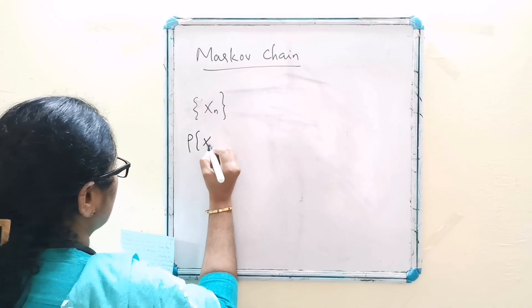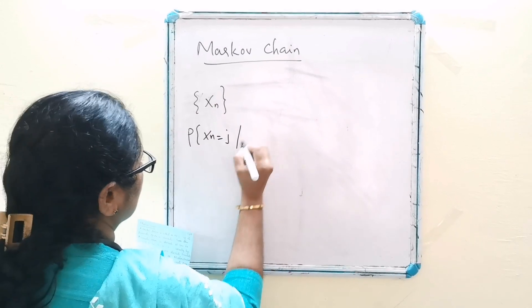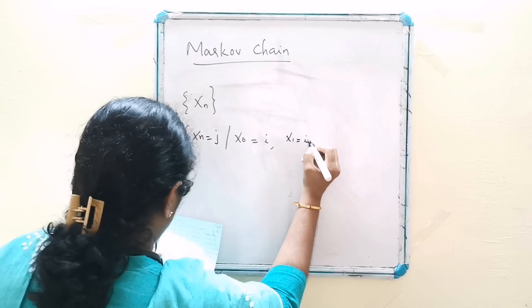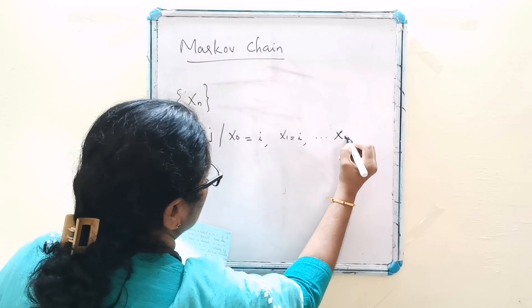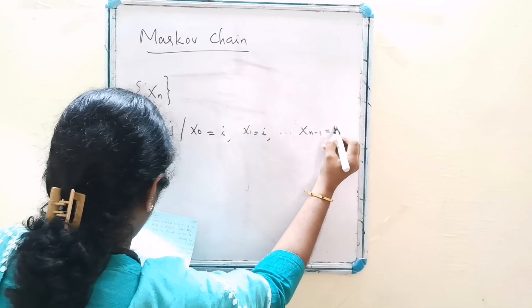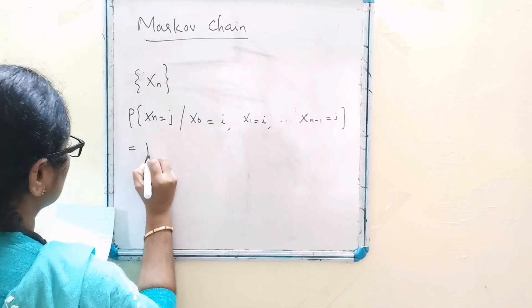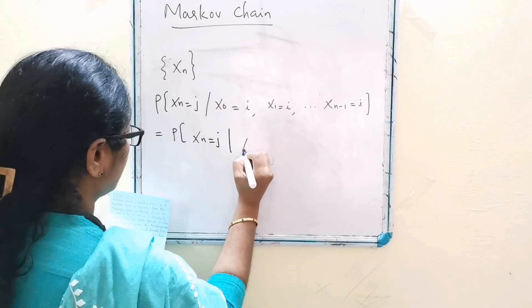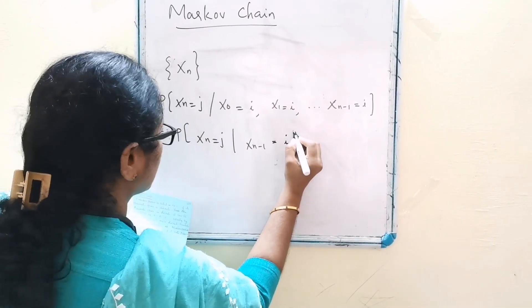probability of xn equal to j given x0 equal to i, x1 equal to i, etc., xn-1 equal to i is equal to probability of xn equal to j given xn-1 equal to i.